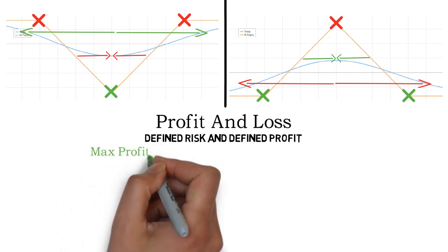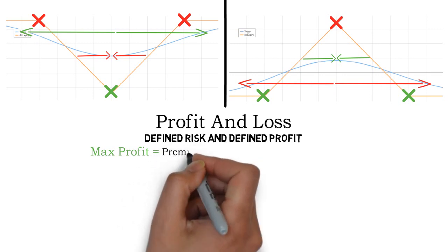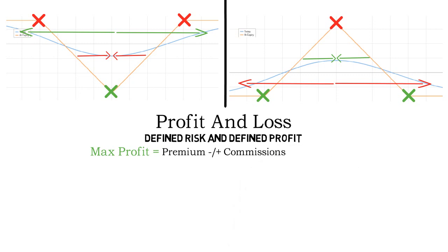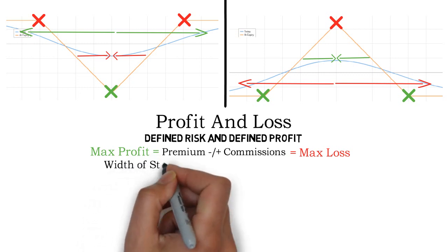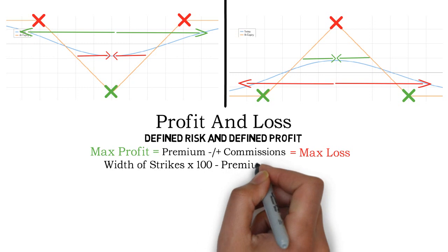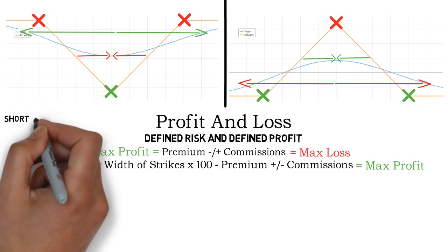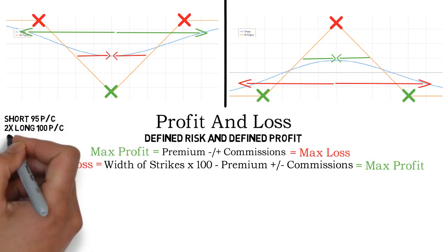The first calculation is very easy. To find out the max profit of short butterflies, you only have to look at the net premium taken in and subtract commissions. The result of that calculation is also the max loss of a long butterfly spread with the exact same setup — the only difference is that you add commissions instead of subtracting them. The next calculation is more complicated: you have to find the width of the strikes on one side, multiply that by 100, and add or subtract commissions. I will present these calculations with two example butterflies, disregarding commissions in the example.